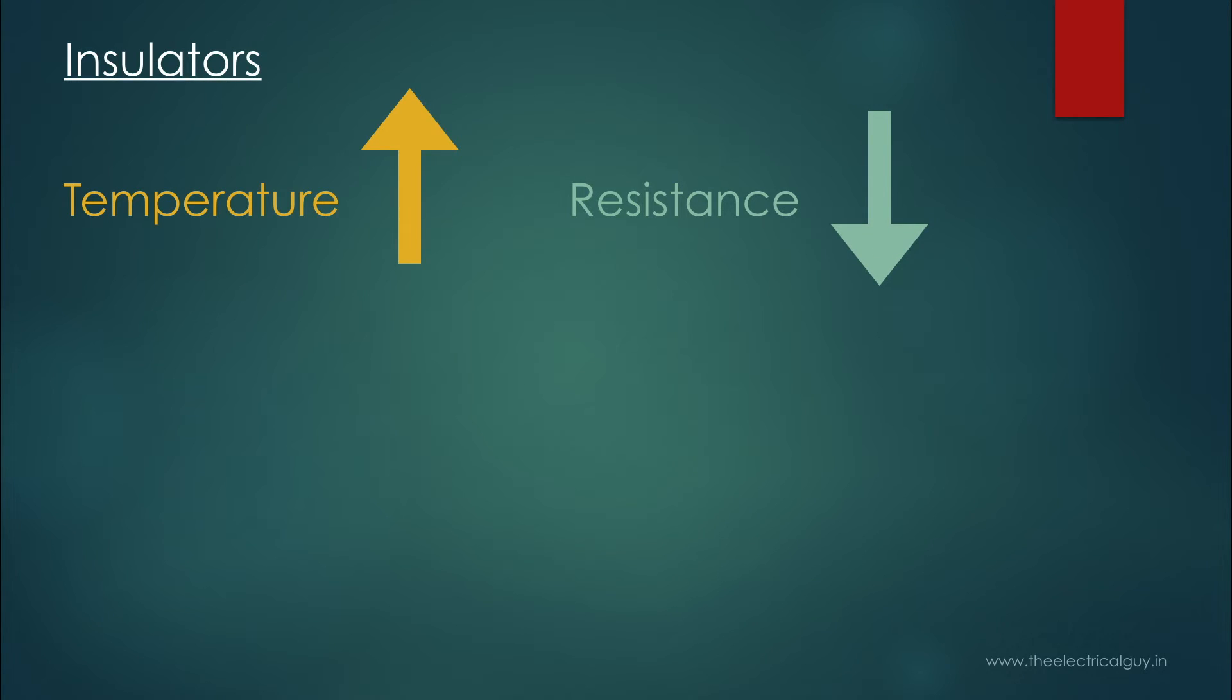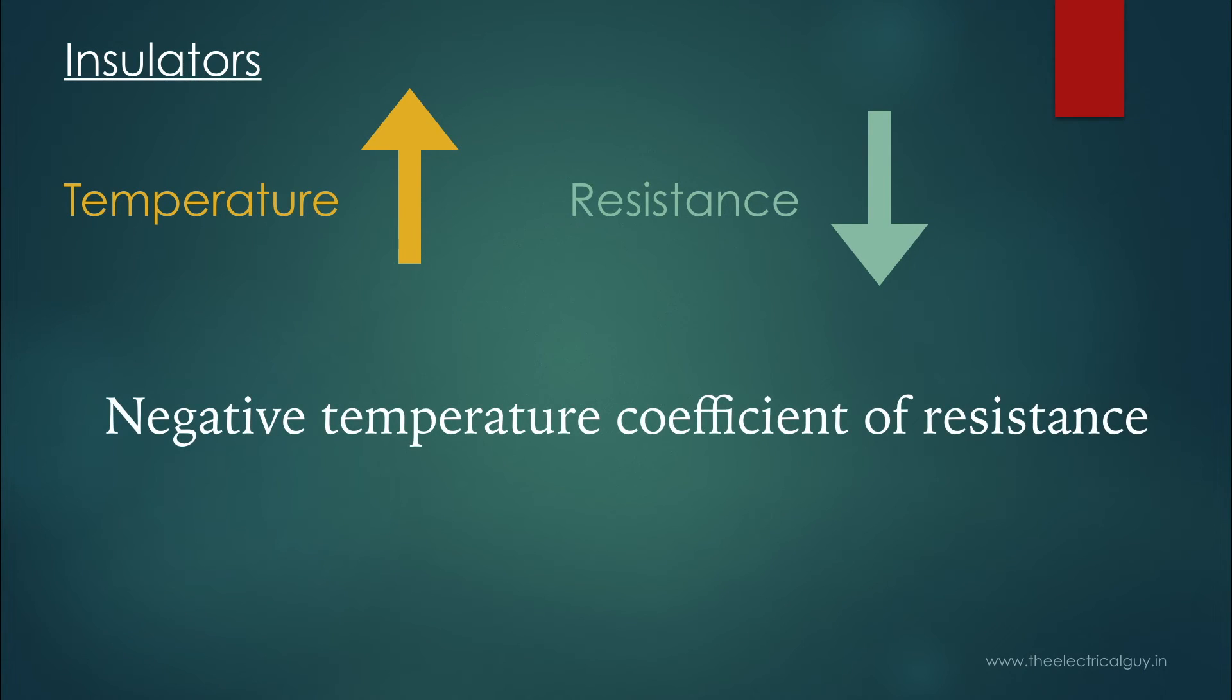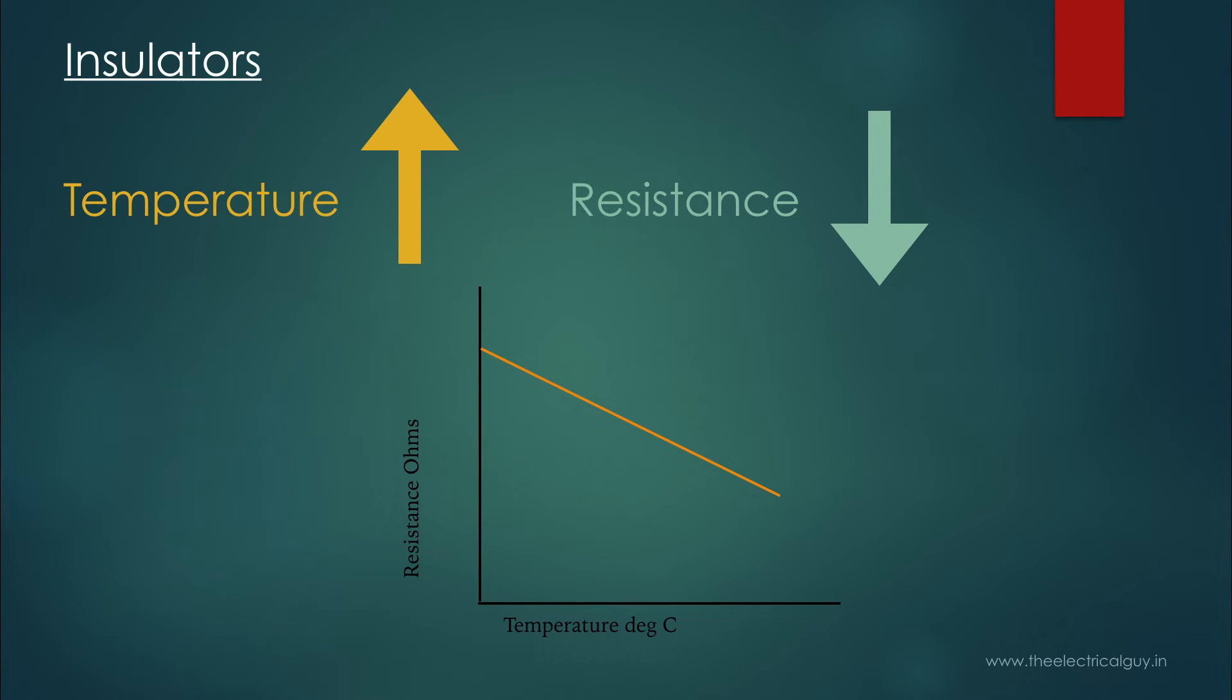Now the material responded to the increase in temperature negatively with decrease in resistance. We call such material to have negative temperature coefficient of resistance. So if we draw a graph of temperature and resistance for such material it will look like this. So this was about the effect of temperature on resistance.